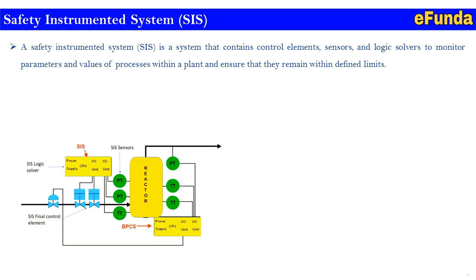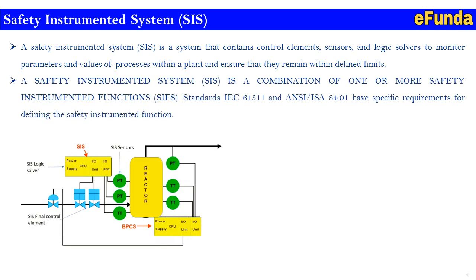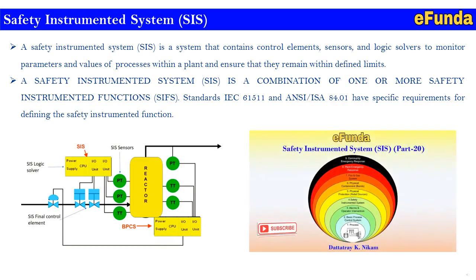This combination is used as a Safety Instrumented Function to form a Safety Instrumented Loop. An SIS is a combination of one or more Safety Instrumented Functions (SIFs) as per standard IEC 61511 and ISA S84.01, which have specific requirements for defining the SIF. We have already created a video on this topic — Safety Instrumented System Part 20 — on our channel eFunda, covering design requirements and implementation.